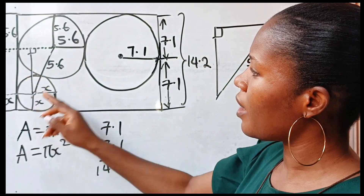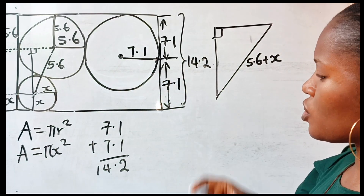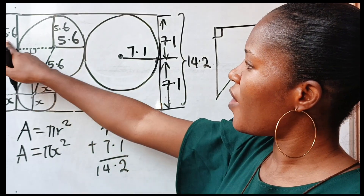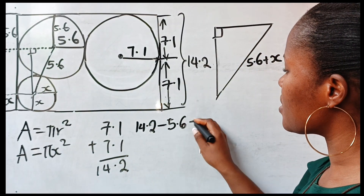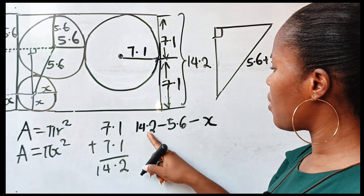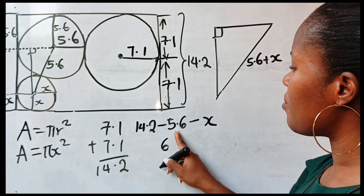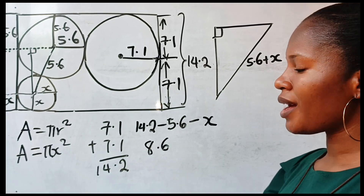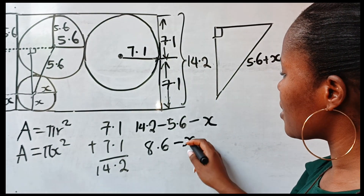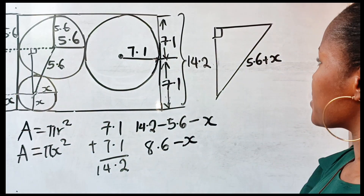This particular line here is going to be equal to 14.2 minus 5.6 minus x. 14 minus 6 gives us 8, and 13 minus 5 gives us 8 — so this will be 8.6. It means that from here to here is 8.6 minus x.